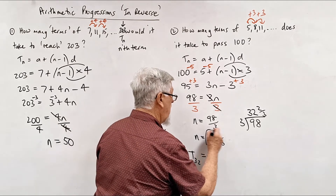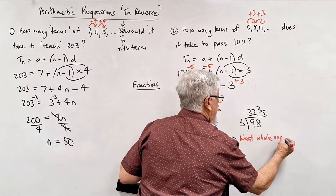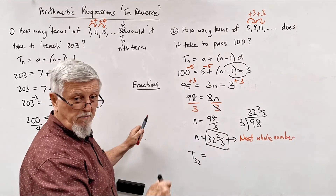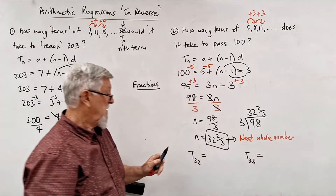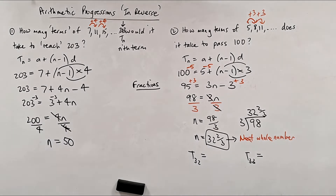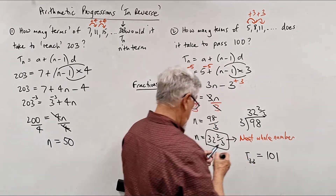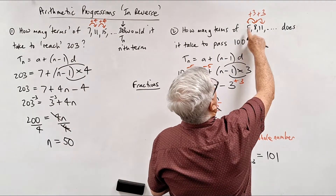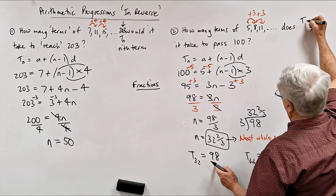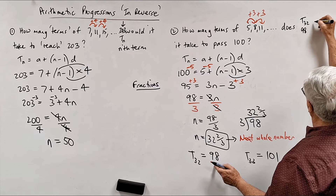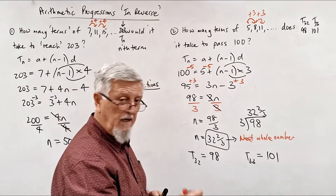When n = 32⅔, the 32nd term won't have gone far enough — you always need to round up to the next whole number. So the answer will be term 33. Looking at the sequence 5, 8, 11, …, how many terms does it take to pass 100? Term 32 equals 98, and term 33 equals 101 — so term 32 is not big enough but term 33 is.